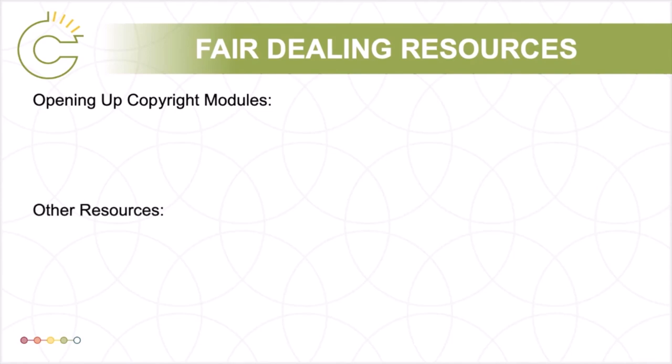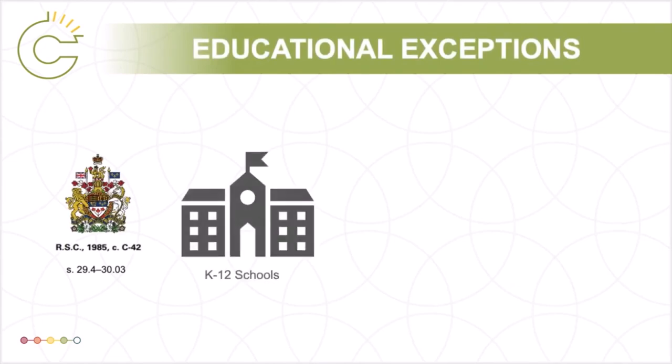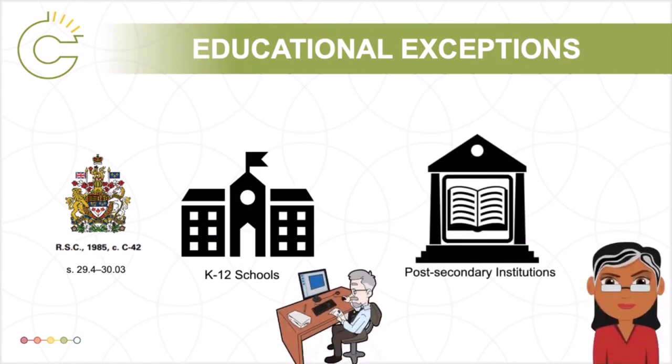In addition to the Fair Dealing Exception, the Copyright Act has outlined other exceptions to infringement for educational contexts. Section 29.4 to Section 30.03 describe the exceptions to infringement that apply specifically to educational institutions and staff. However, these exceptions are not relied on very often, in part because they are cumbersome, and are thus not as relevant as the Fair Dealing Exception, which is commonly relied on in different educational contexts.